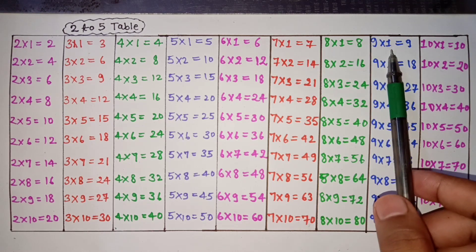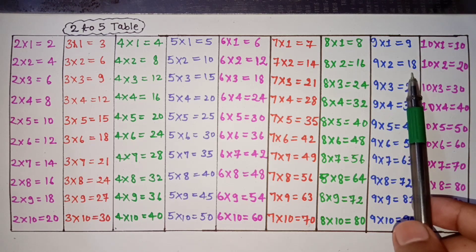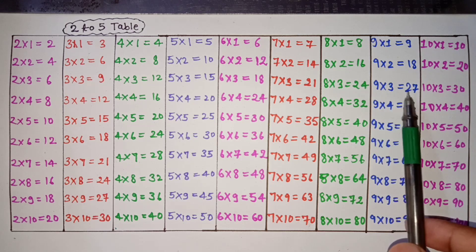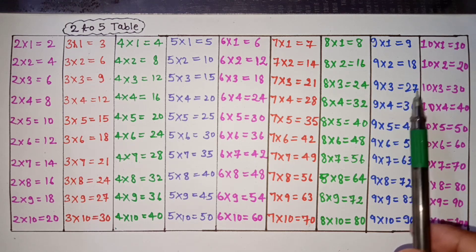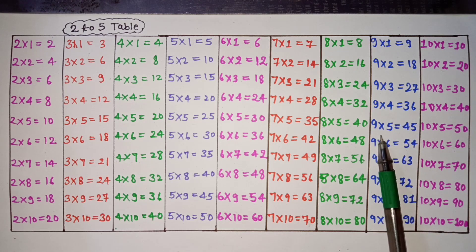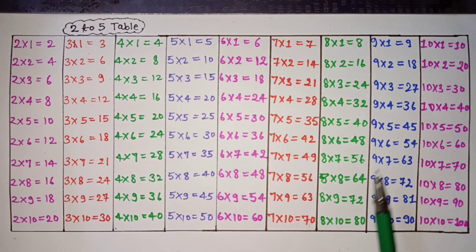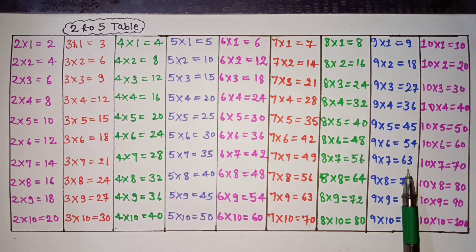9 ones are 9, 9 twos are 18, 9 threes are 27, 9 fours are 36, 9 fives are 45, 9 sixes are 54, 9 sevens are 63, 9 eights are 72, 9 nines are 81, 9 tens are 90.